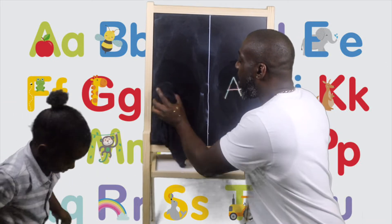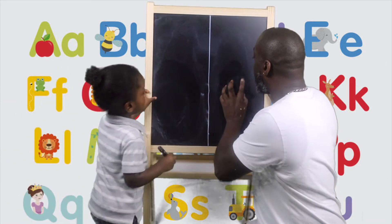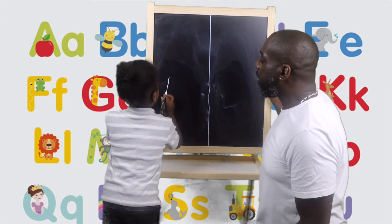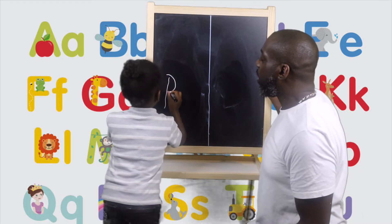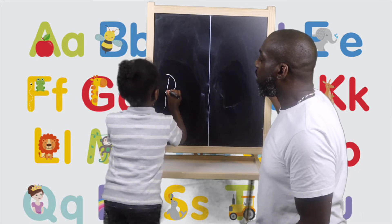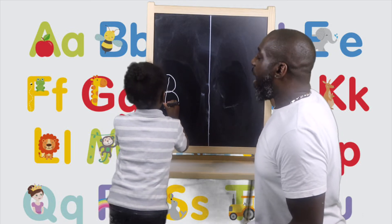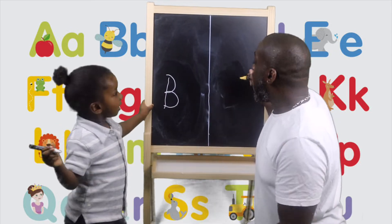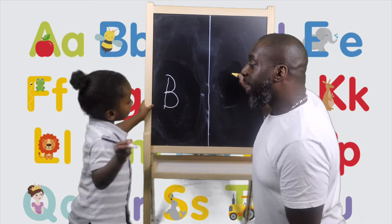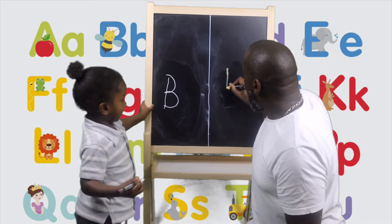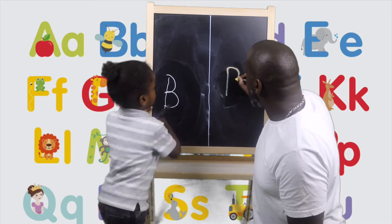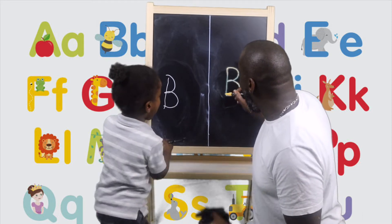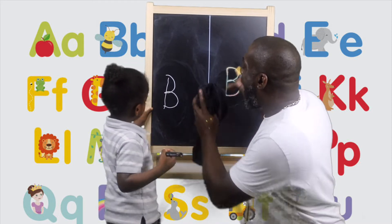What's the second letter of the alphabet? B. And how do we do a B? Down, around to the middle, around to the line. Fantastic. Can everybody see that? Yes. Can Daddy do it? Yes. Down, around to the middle, around to the line. Fantastic.